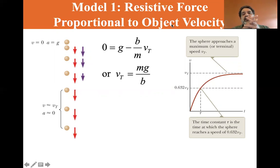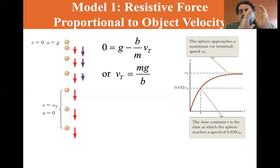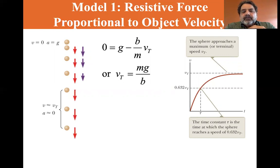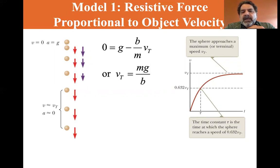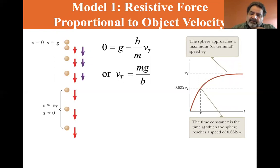To find tau: at terminal velocity there is no acceleration, so the downward force equals the resistive force. Setting acceleration equal to zero gives 0 equals g minus (b/m) times v_t. Solving for terminal velocity: v_t equals mg divided by b.